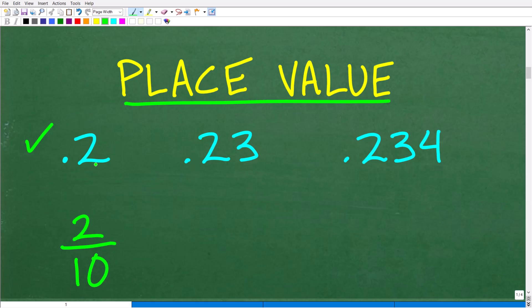But let's suppose I said you cannot use the word point. Don't use the word point. How else can we say this value? Now this is where we're going to have to use place value. So this number, point two, is what we would call two-tenths. This is the fraction two-tenths.